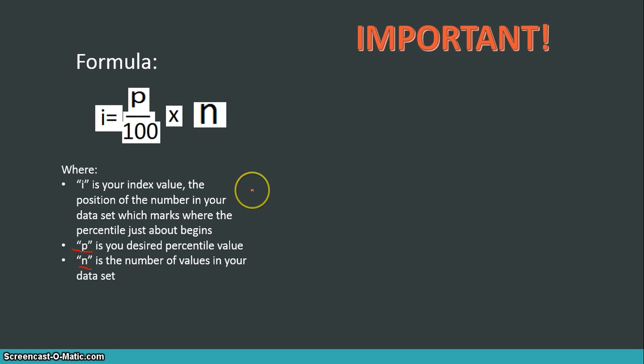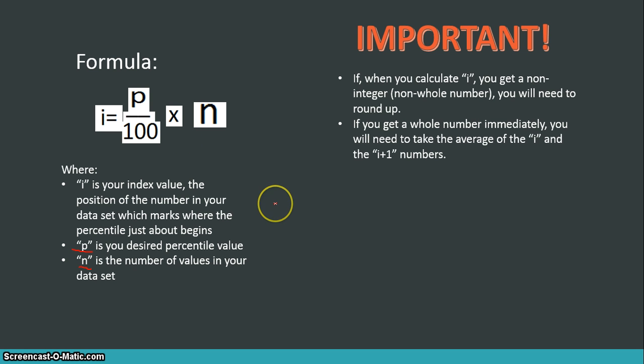But there's a little more to the formula that you need to deal with after you calculate i. And that is if when you calculate i, you get a non-integer, which is a non-whole number, you'll need to round up to the nearest whole number. So if I get, let's say, 12.05 as my i, I'm going to have to round up to 13. And it doesn't matter if I get 12.0000001 or 12.99999 or 12.564342. As long as it's not a clean integer, a clean whole number, I have to round up.